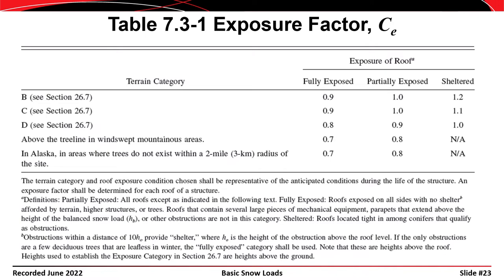Table 7.3-1 shows the exposure factor C sub E as a function of terrain category and roof exposure. The bounds of C sub E range from a low of 0.7 to a high of 1.2 — a rather limited range. One approach is to design conservatively using 1.2, but it's worth looking more specifically. There are three major surface roughness categories, starting with Category B. Category A was retired a few code cycles ago.